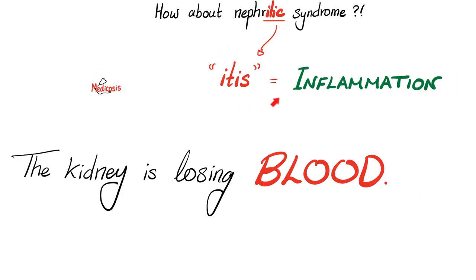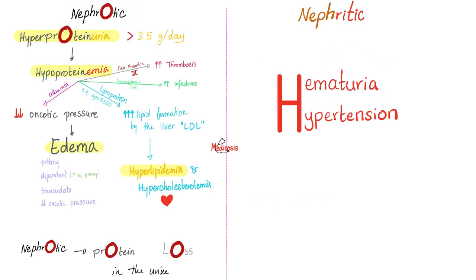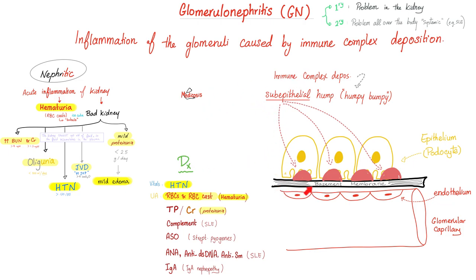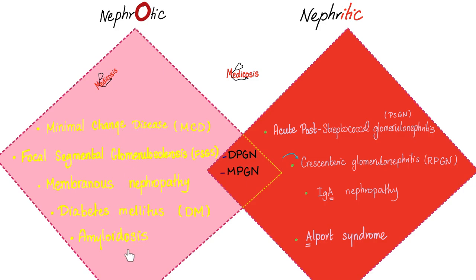The word nephritic has '-itis', meaning inflammation — the kidney is bleeding. The four key features of nephrotic syndrome are: high protein in urine, low protein in blood, edema, and hyperlipidemia. Nephritic syndrome has seven features: blood in the urine (actual red blood cells — not beet, not myoglobin, not hemoglobin — confirmed under the microscope), hypertension, jugular venous distension, mild proteinuria (not nephrotic range), mild edema, oliguria, and elevated BUN and creatinine. This kidney is injured.